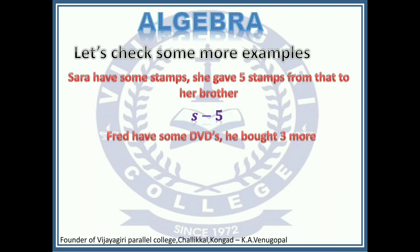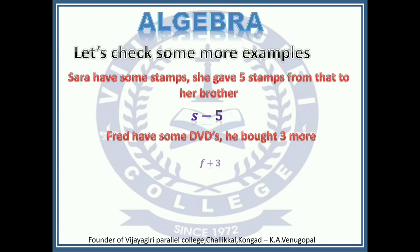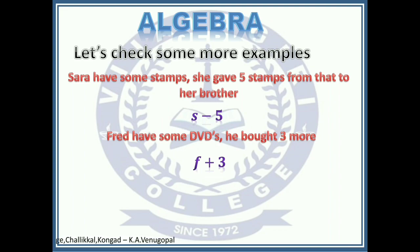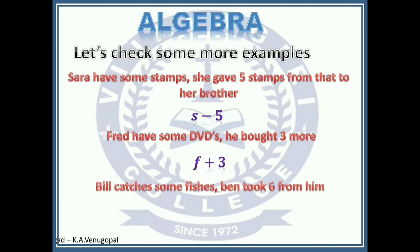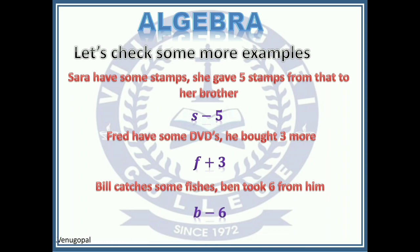Fred has some DVDs and he bought 3 more. Here also, the number of DVDs Fred has is unknown. He bought 3 more means we have to add 3 to it. Let's take f as the number of DVDs he has, so we can express it as f plus 3. Bill catches some fish and Ben took 6 from him. Let's take b as the number of fish Bill caught. If Ben took 6, then the expression becomes b minus 6.